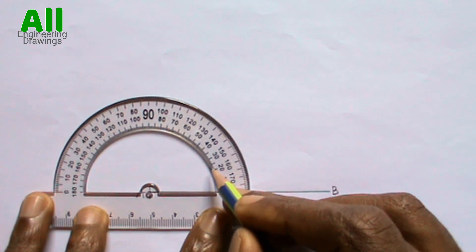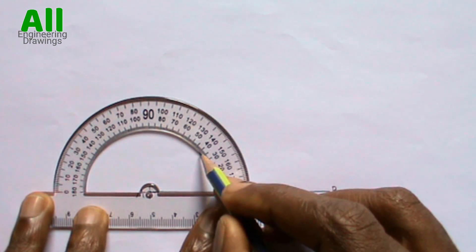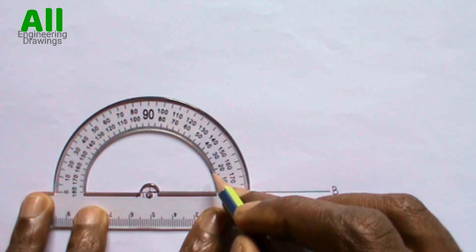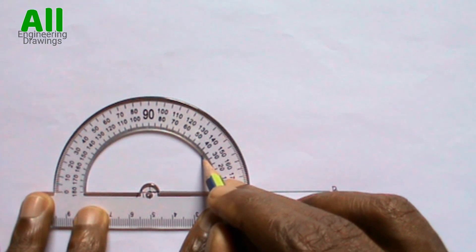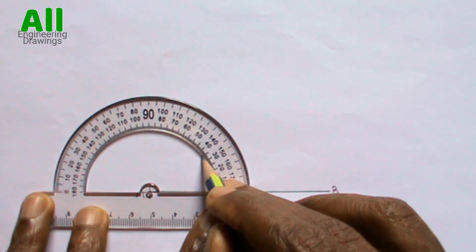If you are given angle 30 degrees, you have to mark point 30 degrees. If given angle 50 degrees, you have to mark point 50 degrees. So I mark my required angle.